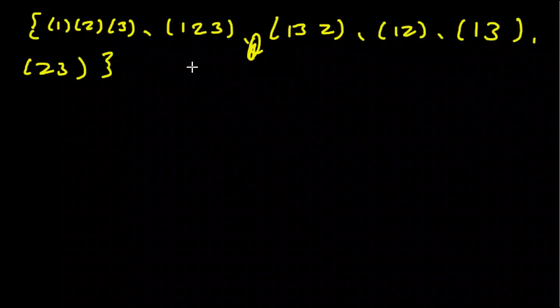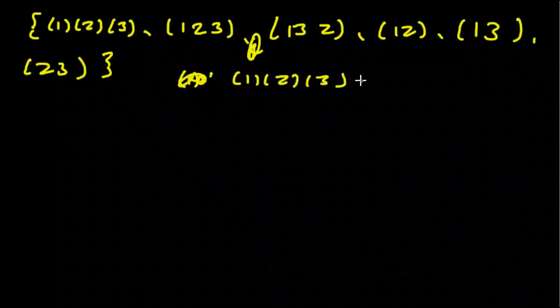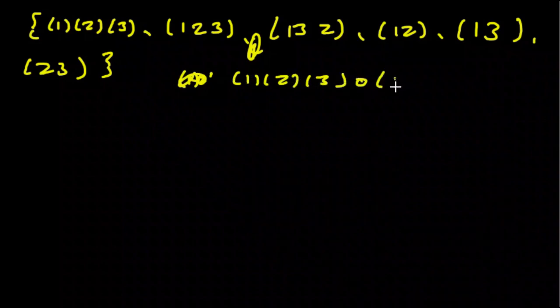So an identity element is an element that, under the binary operation, maps elements to themselves. For example, in our set here, we have the element (1)(2)(3), which clearly is the one that's going to keep all the other permutations the same. Because when we go up to our composition, we go 1 to 2, 2 goes to itself, so that gives us 1, 2. 2 goes to 3, 3 goes to itself, 3 goes to 1, 1 goes to itself, so there you go, it's kept that the same, and it will do that if you compose from either side. So that's an identity element.